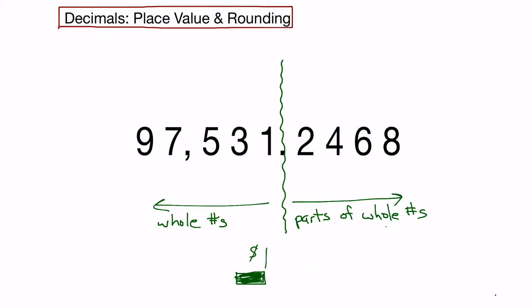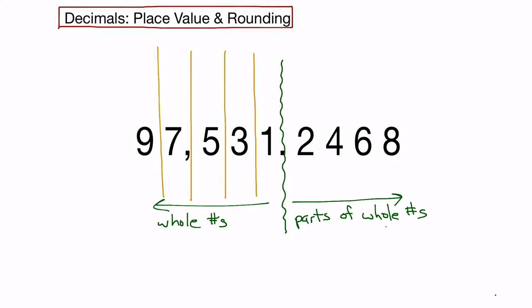I'll remove that so we can look at place value. We will start by looking at the whole numbers first, which is the stuff on the left. We can separate each digit into its own column. The first column is the ones column, the second is the tens column, the third is the hundreds column, the fourth is the thousands column, and the fifth is the ten-thousands column. And we could keep going.